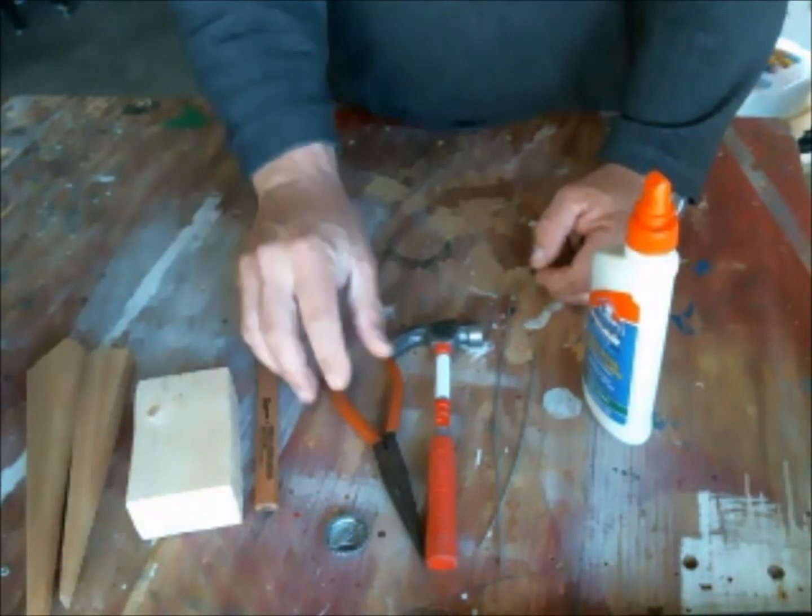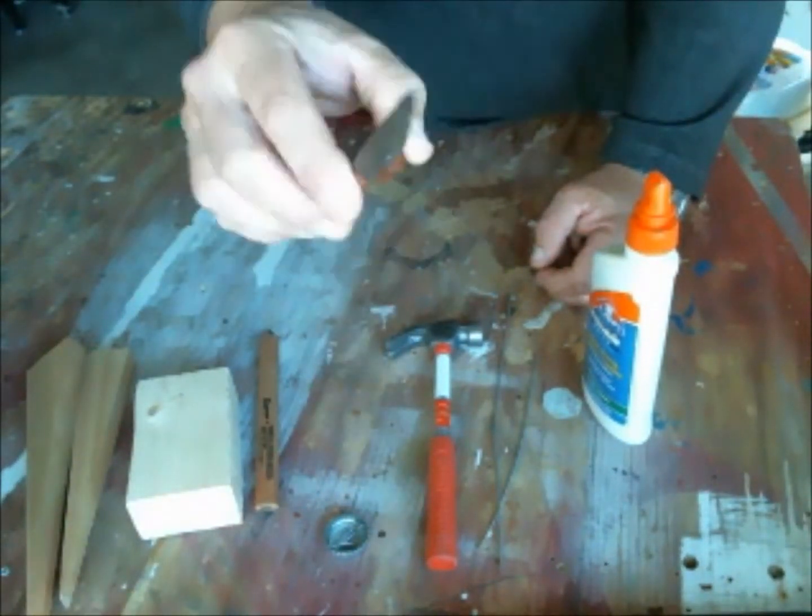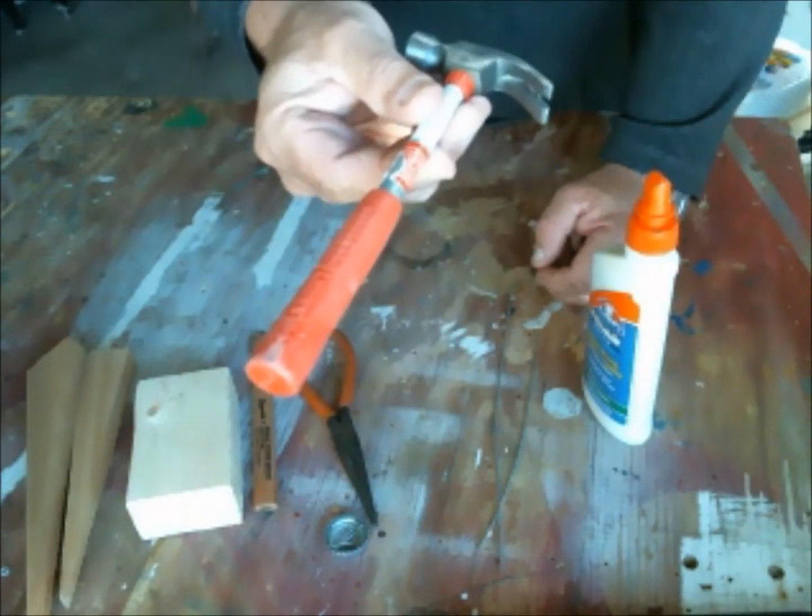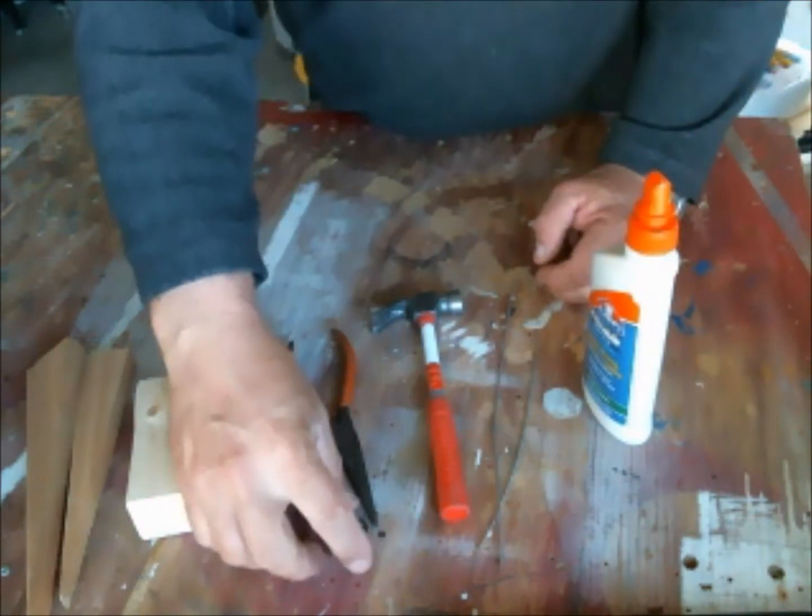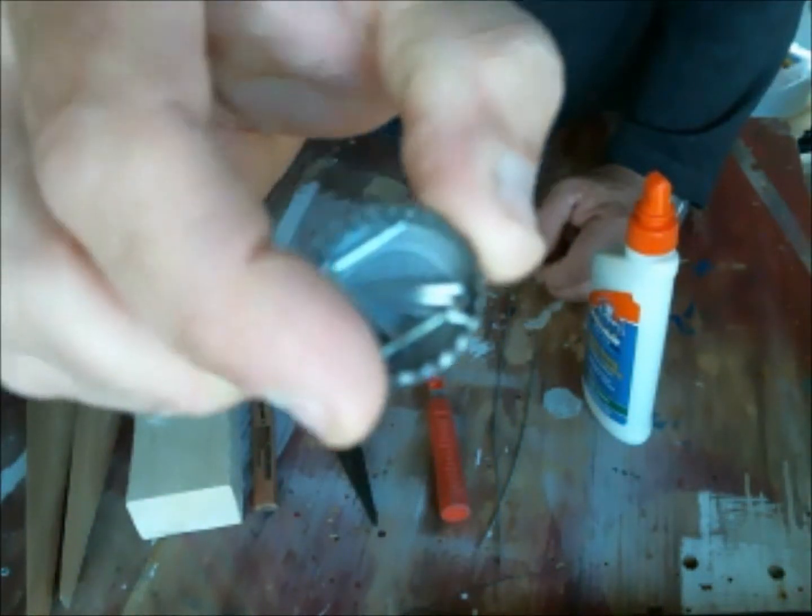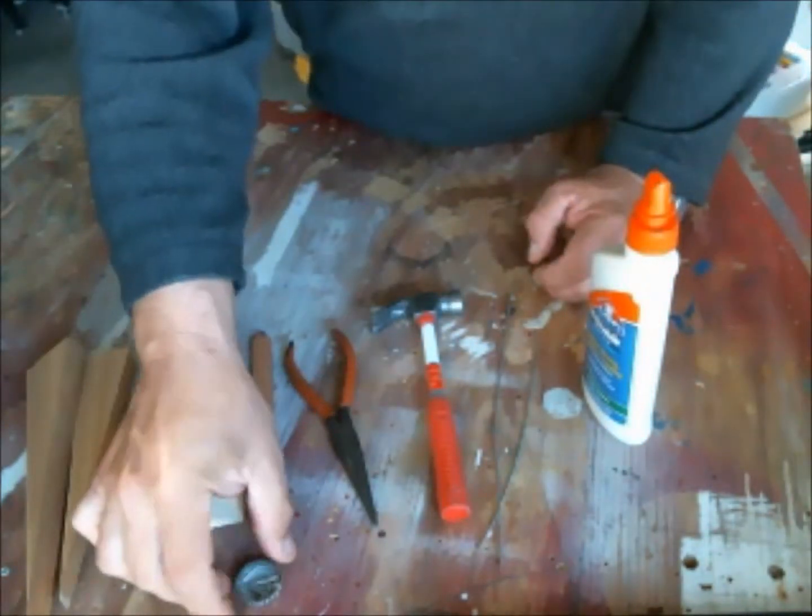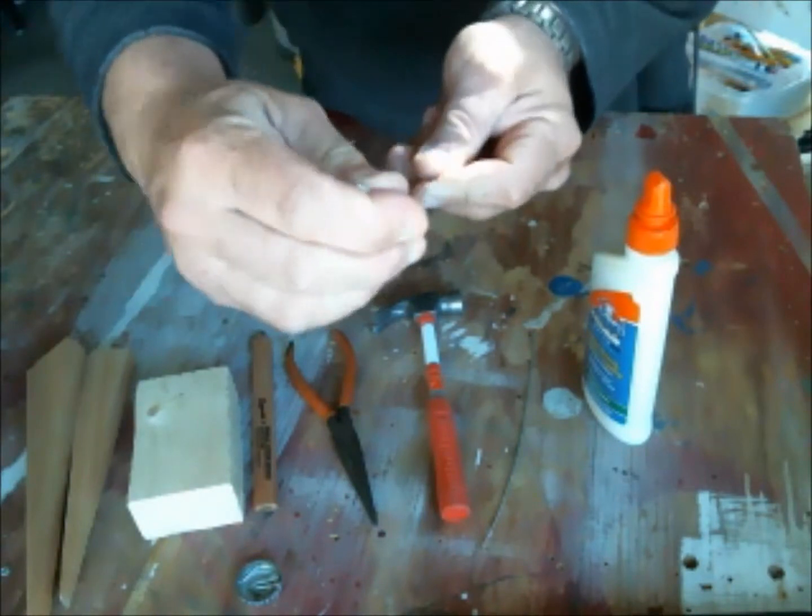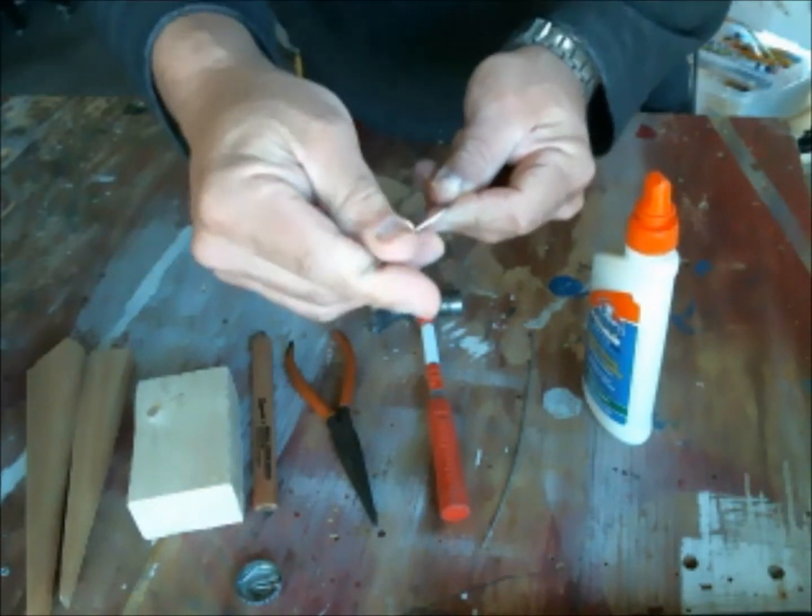We'll use some needle nose pliers, a small hammer, and we'll use that for these very small tacks, small nails. We'll also need some wire that's stiff enough to hold everything in place yet flexible enough to move with your fingers easily.